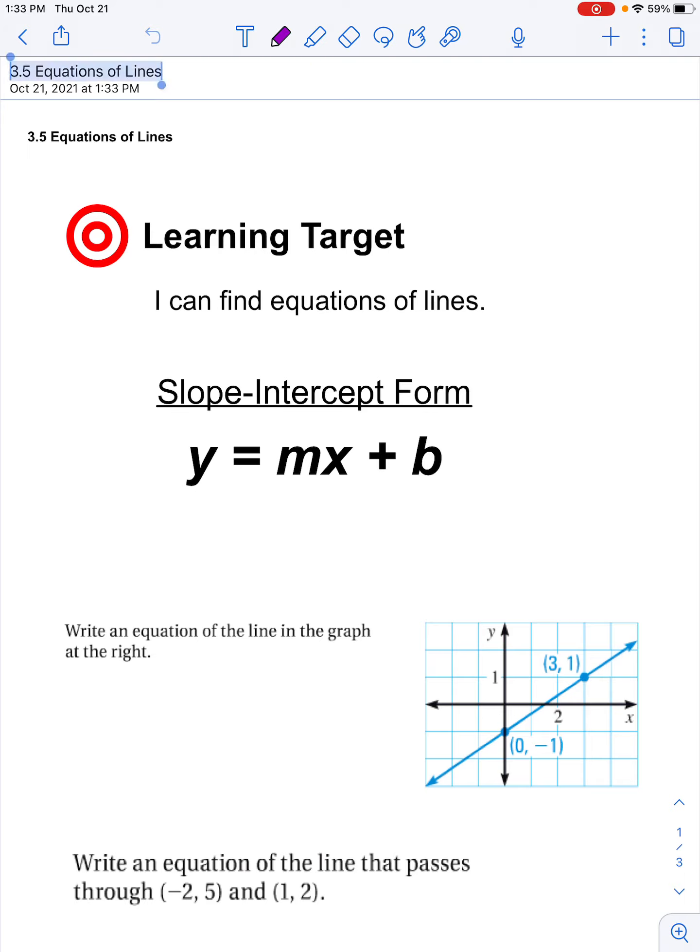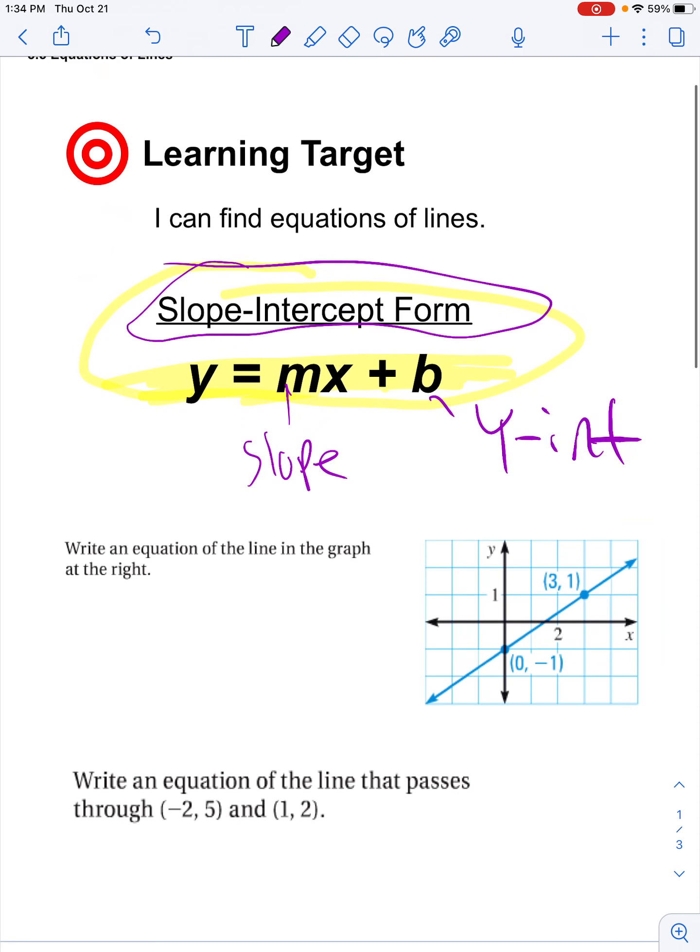Alright, we're going to be looking at some equations of lines here. So one of the super big equations that we talk about is slope-intercept form, y equals mx plus b. m is our slope, b is our y-intercept, hence the name slope-intercept form.